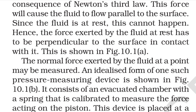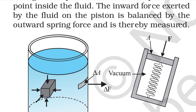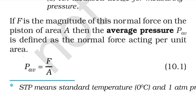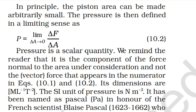The normal force exerted by the fluid at a point may be measured. An idealized pressure measuring device consists of an evacuated chamber with a spring force calibrated to measure the force on the piston. If F is the magnitude of this normal force on the piston of area A, then the average pressure P_avg is defined as the normal force per unit area: P_avg = F/A.